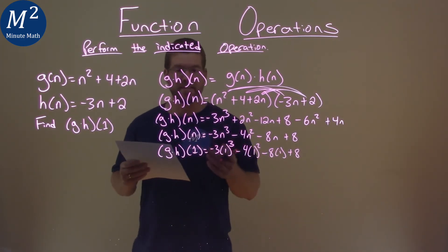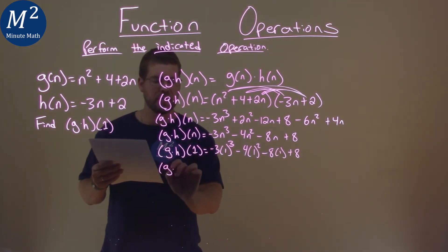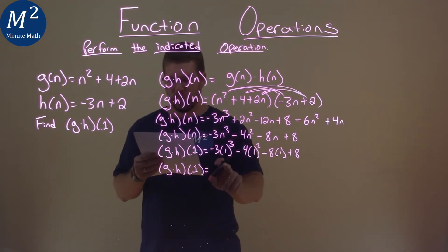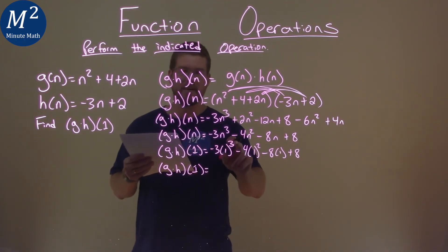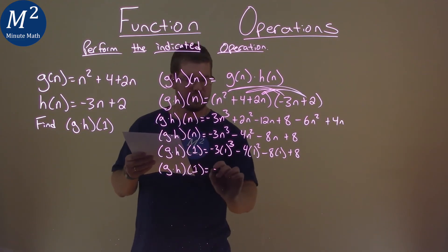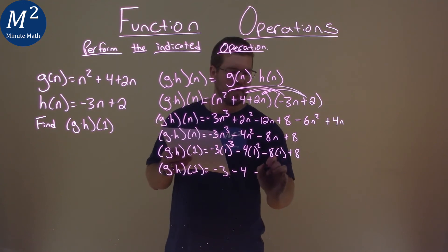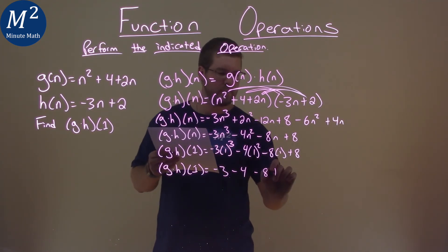And from here we need to simplify. So again g times h of 1 is equal to well 1 to the third power is just 1 times negative 3. 1 to the second power is 1 we have minus 4 here and then 8 times 1 is 8 plus 8.